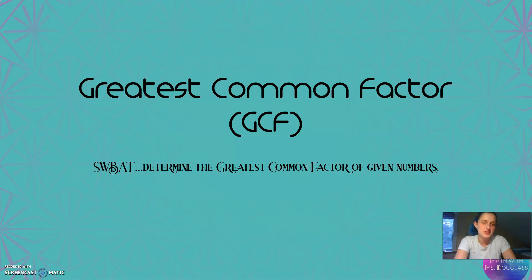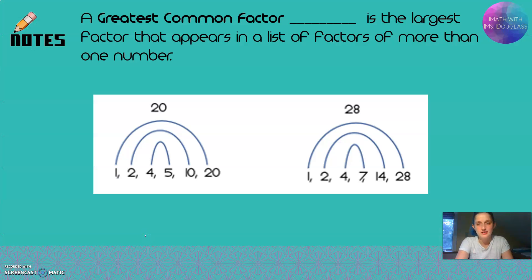Hey mathematicians! We've talked about factors before, but now we're going to talk about how to find the greatest common factor. A greatest common factor, we often call the GCF just for short. It's the biggest factor that appears in a list of factors of more than one number.